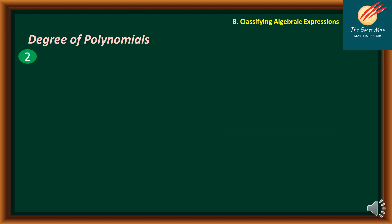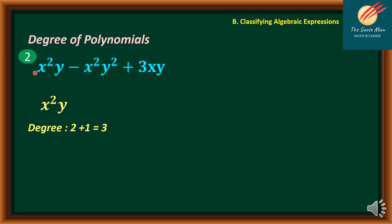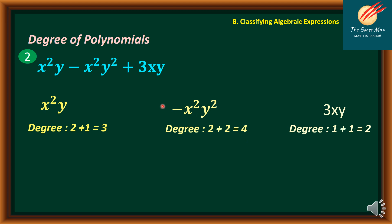For polynomials with more than one variable, the degree of each term is the sum of the exponents of its variables. Consider x squared y minus x squared y squared plus 3xy. The first term x squared y has exponents 2 and 1, giving degree 3. The second term negative x squared y squared has exponents 2 plus 2, giving degree 4. The third term 3xy has exponents 1 plus 1, giving degree 2. Therefore, the polynomial is in the fourth degree — the highest sum.